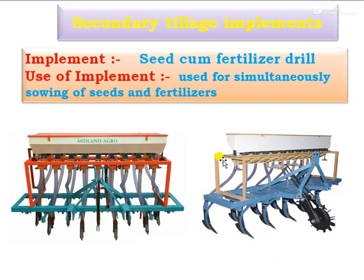Then the seed-cum-fertilizer drill has two pipes installed — one pipe drops the seed material and the second one drops the fertilizer. It is used for simultaneously sowing of the seed and the fertilizers in proper spacing and depth of placement.